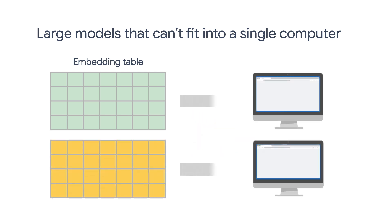In this case, we need to shard the giant embedding table and split it over multiple machines, each running TensorFlow Serving to serve their embedding shard. We could then have a master graph that processes the input request, farms out requests to the various leaf shards, post-processes their responses, and returns the final response to the user.